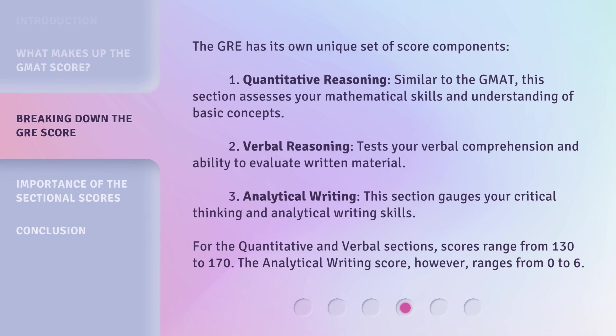The GRE has its own unique set of score components. 1. Quantitative Reasoning: Similar to the GMAT, this section assesses your mathematical skills and understanding of basic concepts. 2. Verbal Reasoning: Tests your verbal comprehension and ability to evaluate written material. 3. Analytical Writing: This section gauges your critical thinking and analytical writing skills.